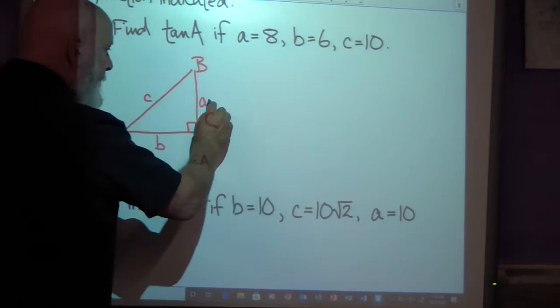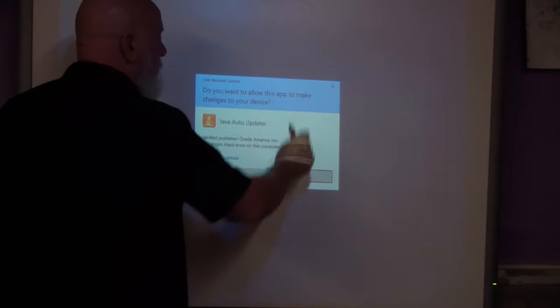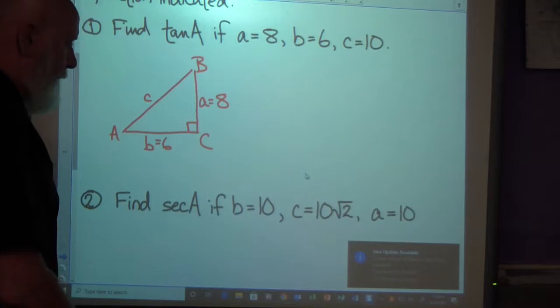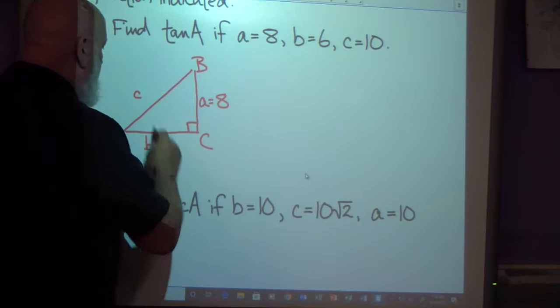And I want A to equal 8 because that's what I'm given. I want B to equal 6 because that's also what I'm given. And C opposite angle C is 10, and C is 10. Here we go.